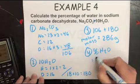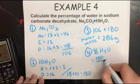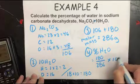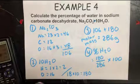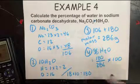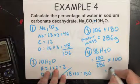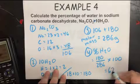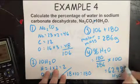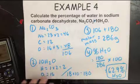Okay, so 180 divided by 286 times 100, which gives you 62.9% H2O. Okay.